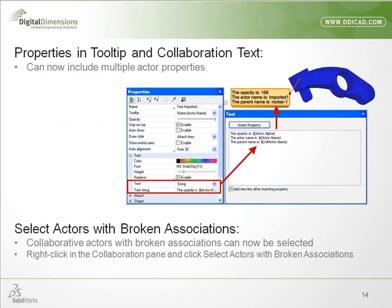Properties in tooltip and collaboration text: you can now include multiple actor properties. You can group things together and link information into a particular note. The help file is a good resource for those dollar-sign variable values. Also new: Select Actors with Broken Associations — if an actor has become disconnected, you can right-click in the collaboration pane and re-associate it. That's more of a troubleshooting step.